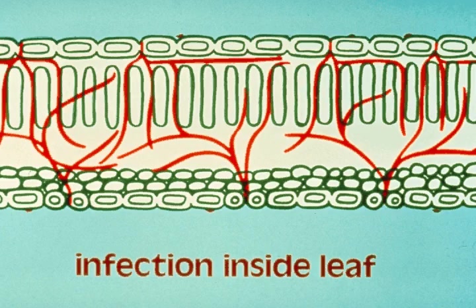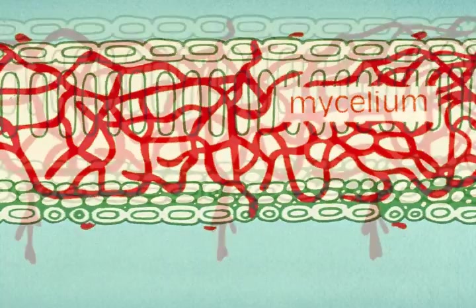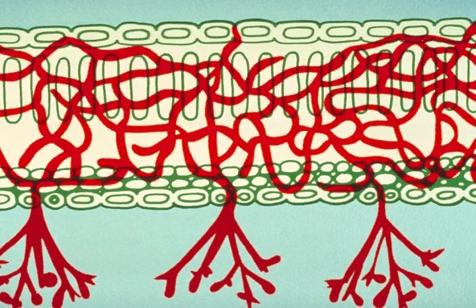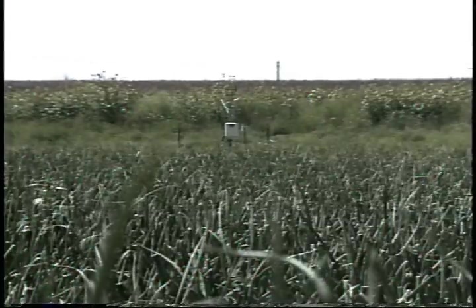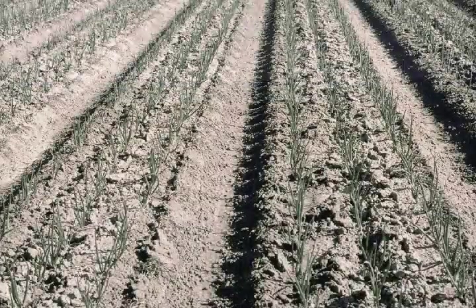A more dense mat of mycelium then develops. Seven to 10 days after infection, the fungus can emerge to produce more spores, usually on the less exposed surface of the leaf. The spores are then blown by wind to continue the disease cycle.